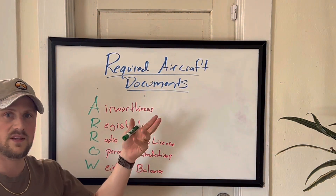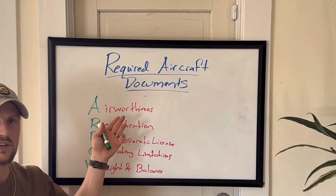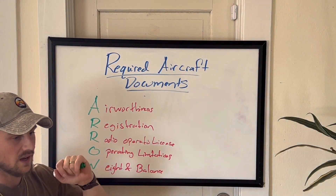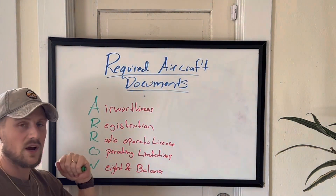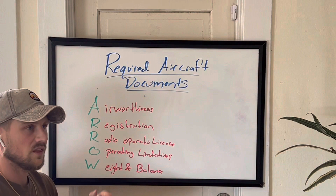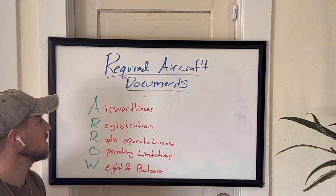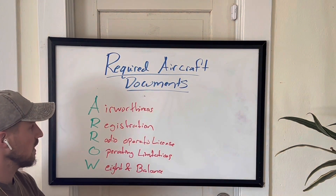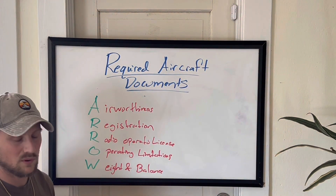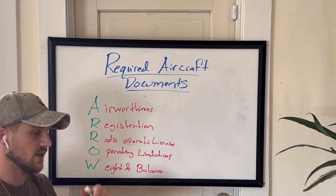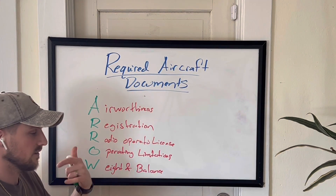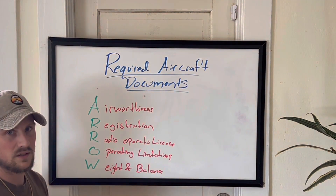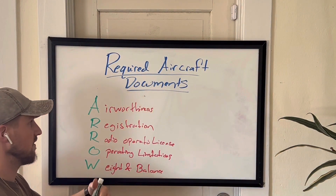For airworthiness, this document does not have an expiration date. It is valid as long as your aircraft follows all the maintenance requirements. That includes all the required inspections and all the airworthiness directives. So as long as the maintenance is kept up to date and it's marked correctly in the logbook and performed by a correct mechanic, your airworthiness document will stay valid.